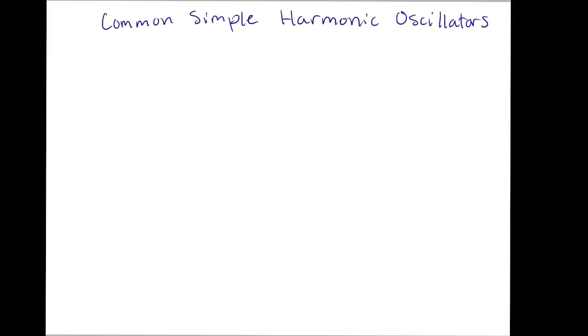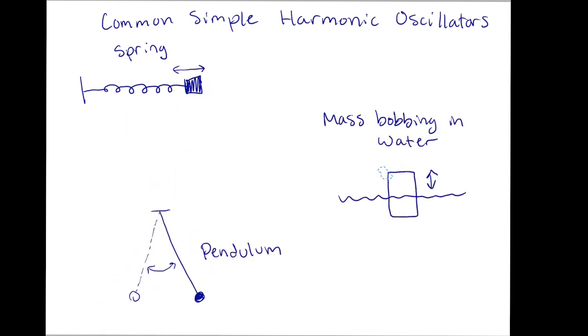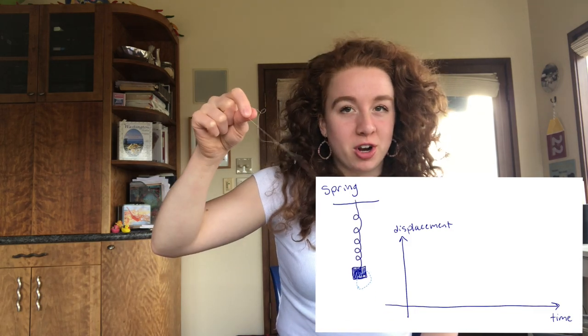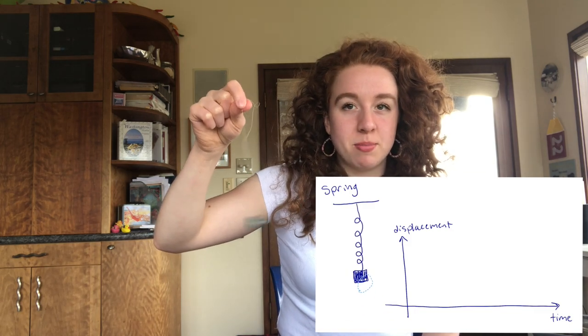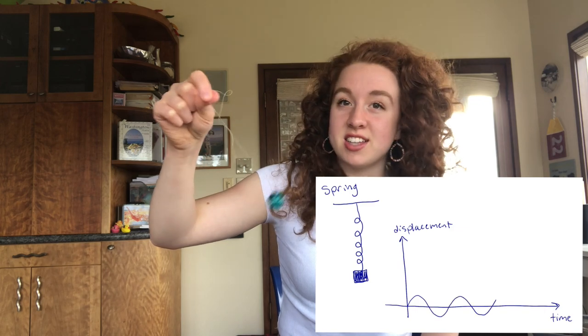Now a harmonic oscillator is a specific type of oscillator with a more predictable motion. A few simple harmonic oscillators which are commonly found are springs, pendulums, or buoys bobbing in water. These types of oscillators are called simple harmonic oscillators because if you were to graph the motion of these objects, it would look like a sine wave.